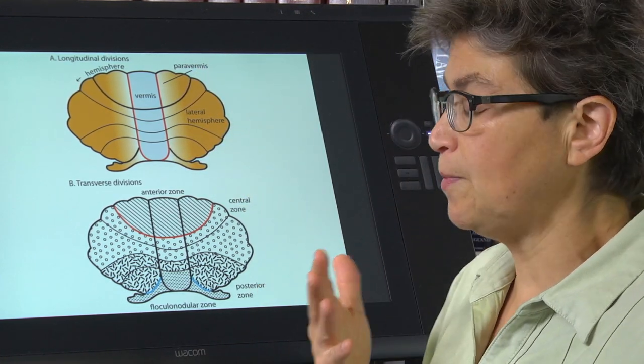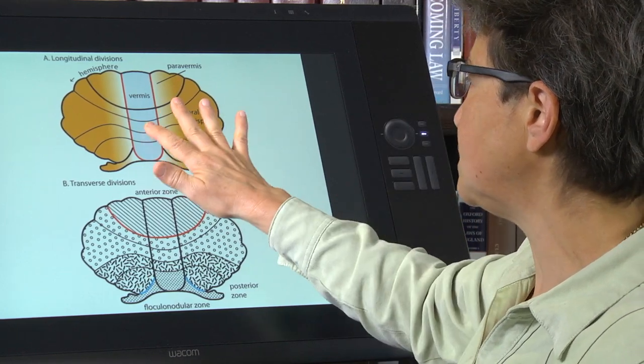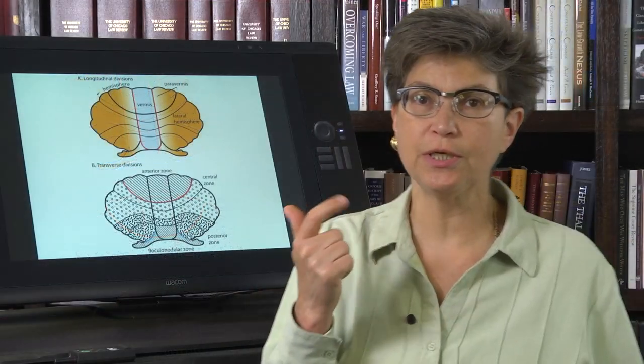So what do these three parts do? Well, the vermis is involved in speech, gait, posture, and stance, posture and stance being very similar.